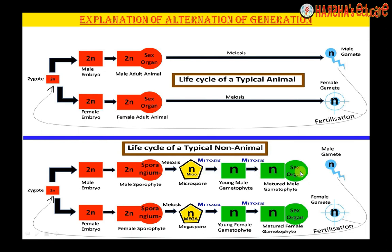Suppose meiosis occurred instead. What would be the result? The gamete would contain n/2 ploidy — this is impossible and not compatible with the life cycle. Because n/2 means the whole life cycle will be disturbed: n/2 plus n/2 would again become n, then n/2 here, and in the next generation it would become n/4. So the sex organ produces gametes only by mitosis. The gametes then undergo fertilization to produce the zygote, and the same cycle continues again and again.